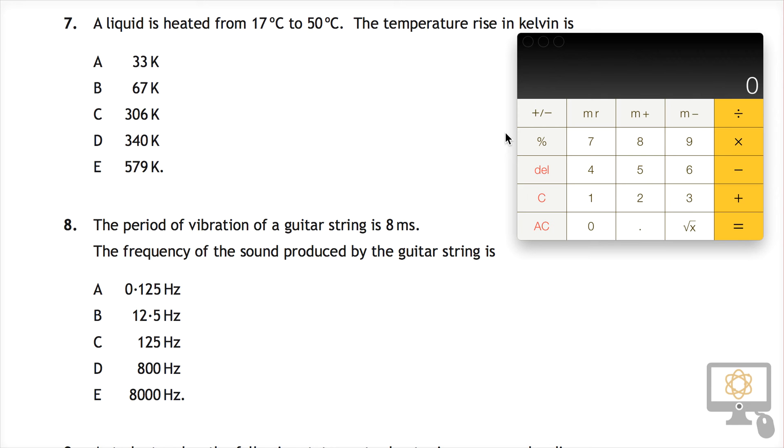We're going to be looking at question number 8 from the National 5 2014 physics paper. I've just left the calculator up here because we're going to be using that in just a moment. It says the period of vibration of a guitar string is 8 milliseconds.